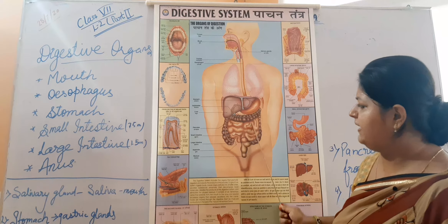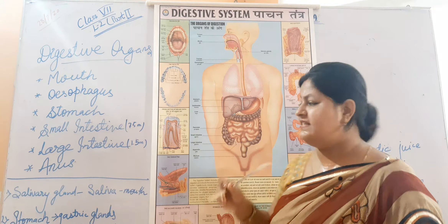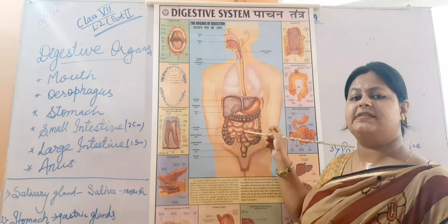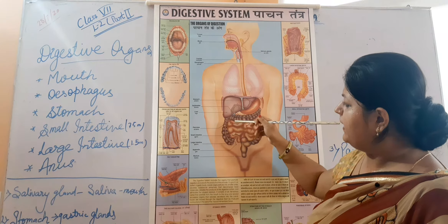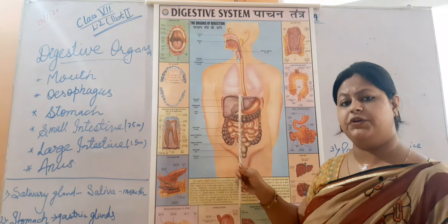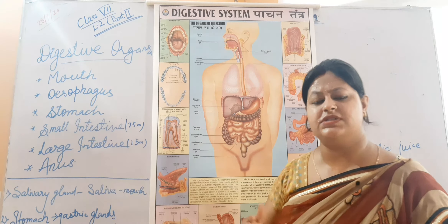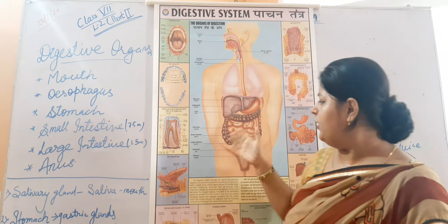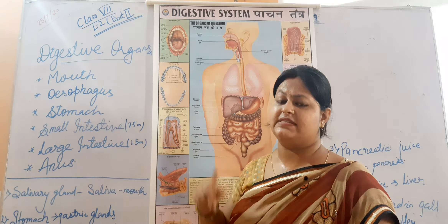The small intestine is the longest part of our digestive system — it is around 7.5 metres long and is in a coiled shape, arranged within the large intestine. When food is transferred from the stomach to the small intestine, the process of digestion is almost completed here. The process of absorption is also done in the small intestine.